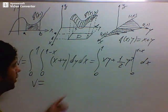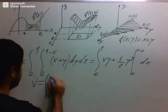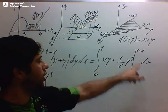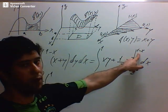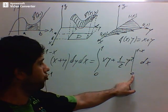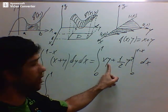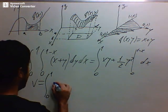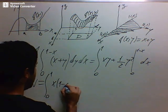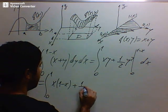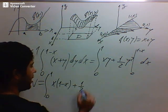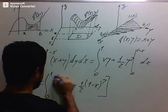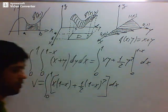The volume is the integral from 0 to 1 in x. Substituting y = (1−x), we get x·(1−x) + (1/2)·(1−x)², all in dx. When we substitute y = 0, everything becomes 0, so we only need to evaluate at the upper bound.